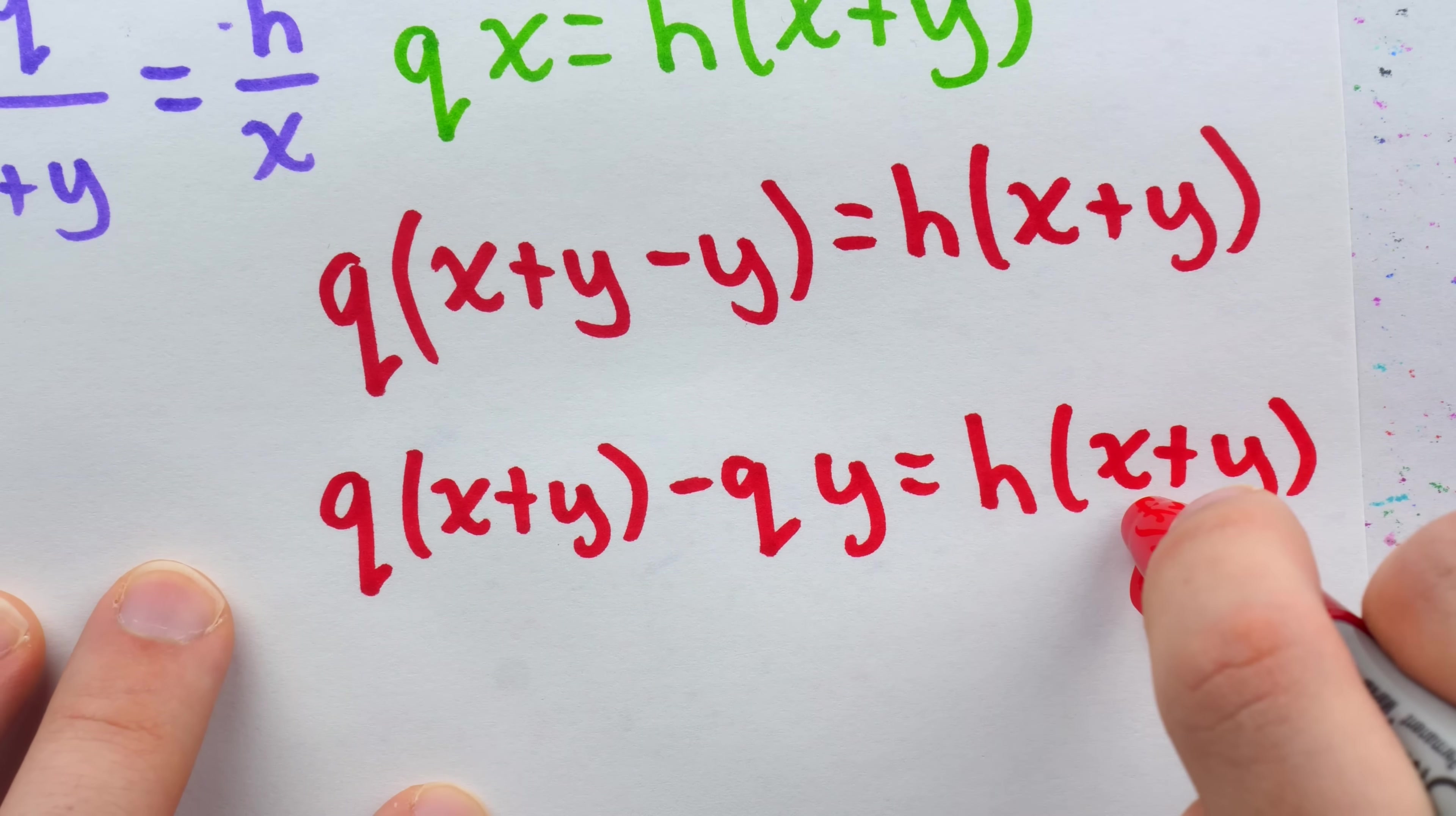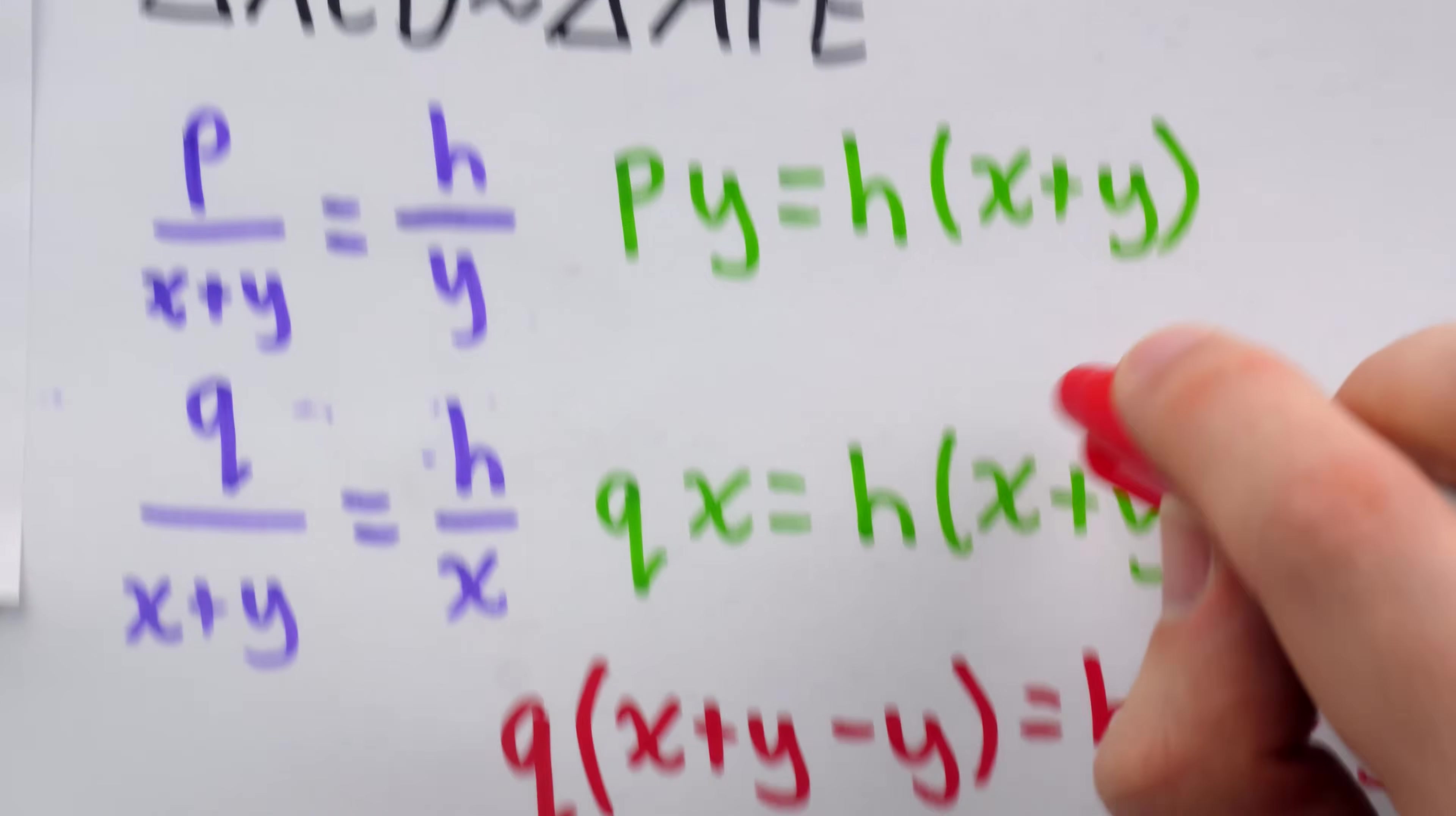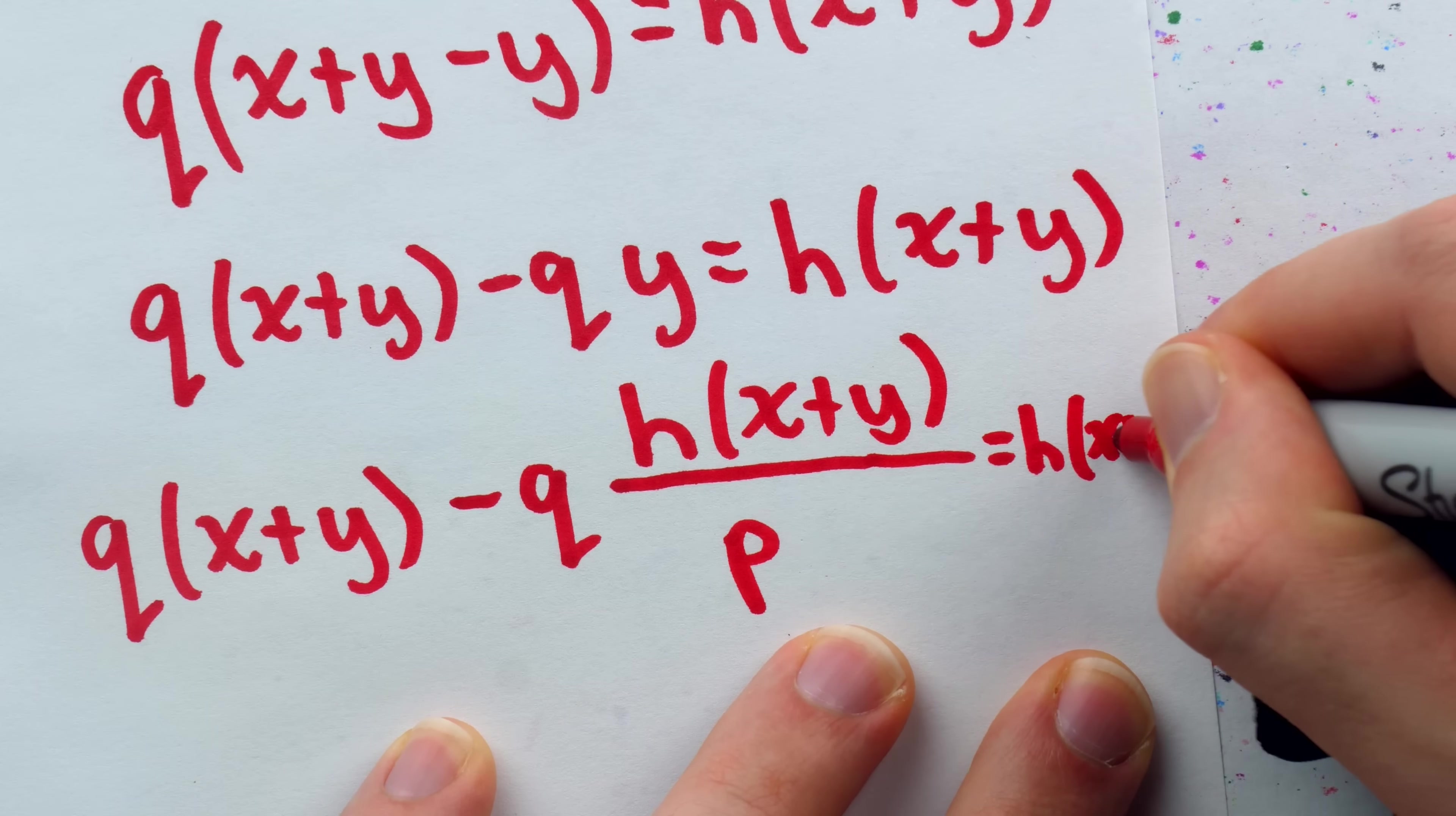Now, it's almost true that everything here has a factor of X plus Y, and we could divide them all out. Except, of course, this term has a factor of Y, not X plus Y. However, if we look back at the first equation, if we divided both sides of this equation by P, we would have that Y equals H times X plus Y over P. So we're going to replace this Y with H times X plus Y over P, using this first equation. So now, minus Q times Y becomes minus Q times H times X plus Y over P. And again, this equals on the right side, which I really have to squish in here, H times X plus Y.